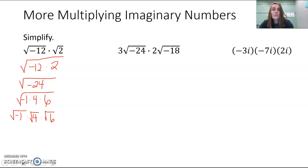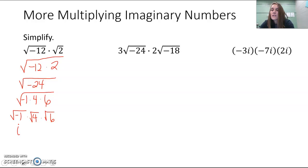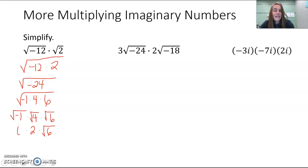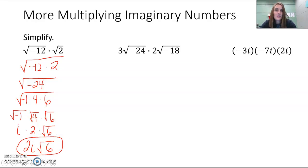Now perform each of those square roots. The square root of negative 1 is i — that is your imaginary number, because we can't take the square root of a negative. The square root of 4 is 2. The square root of 6 can't be simplified, since 6 is just 2 and 3. We usually put i after the coefficient of 2, so we write 2i√6. That is our final simplified answer.